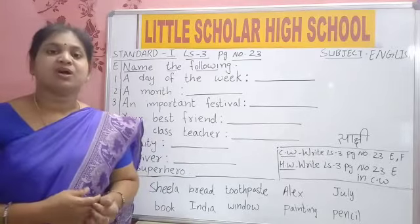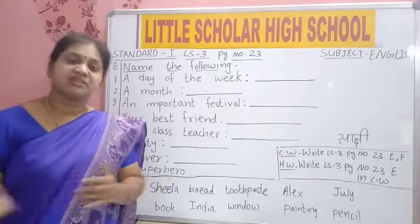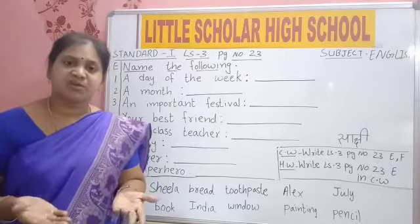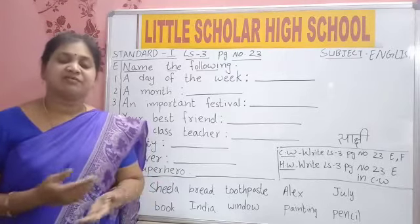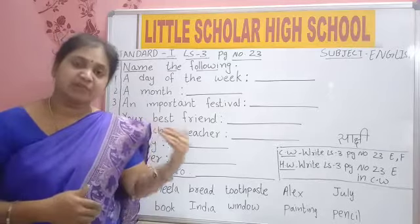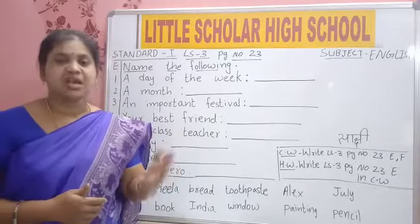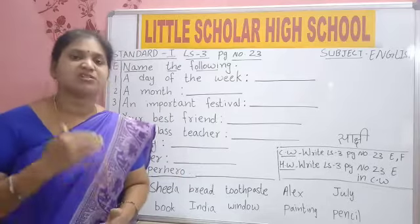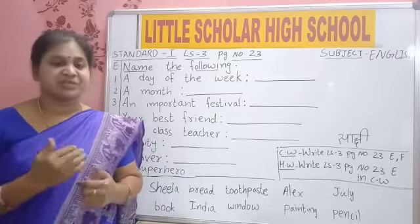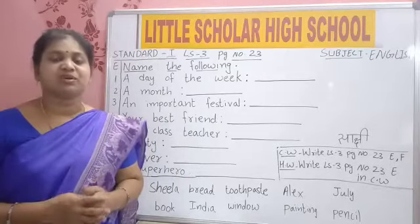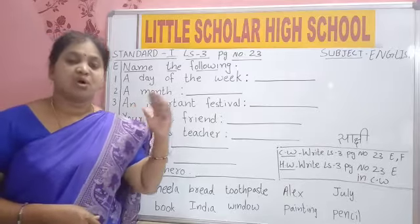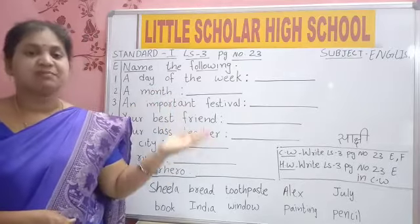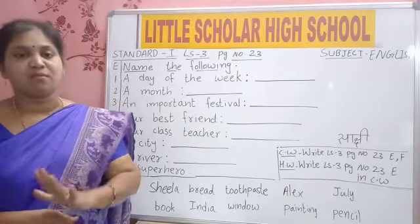If we say 'dog is running', dog is common. But if we give a name to the dog and say 'Brownie is running', then Brownie is a special name. In this way we use both common names and special names.